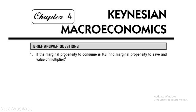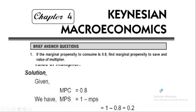Question 1: If the marginal propensity to consume is 0.8, find the marginal propensity to save and the value of the multiplier. The formula is: marginal propensity to save is 1 minus MPC. So, MPS = 1 minus 0.8 = 0.2.